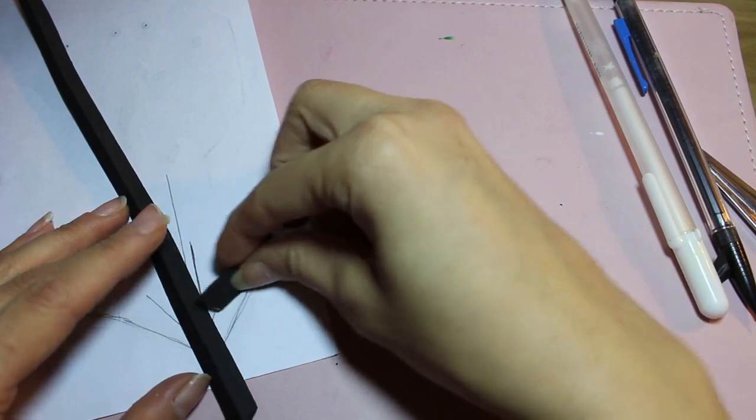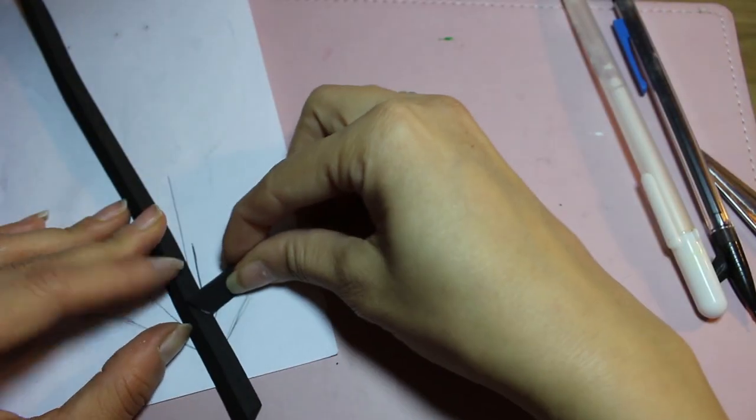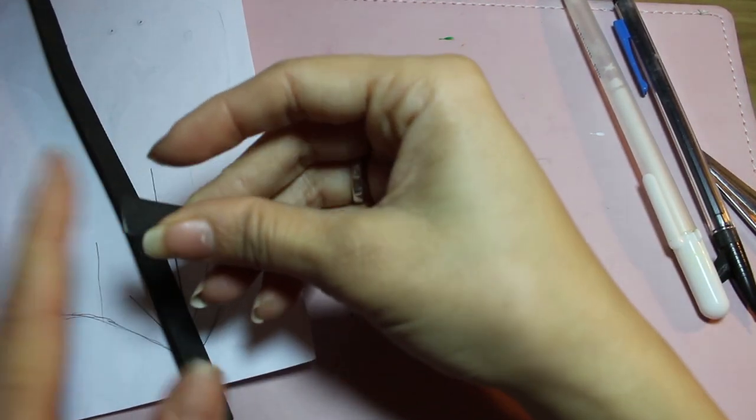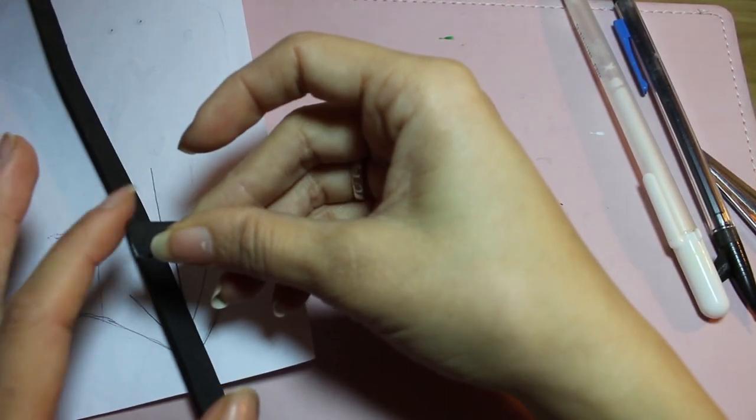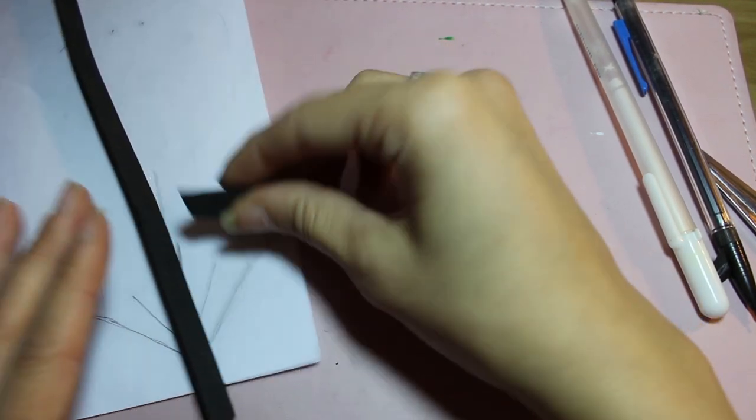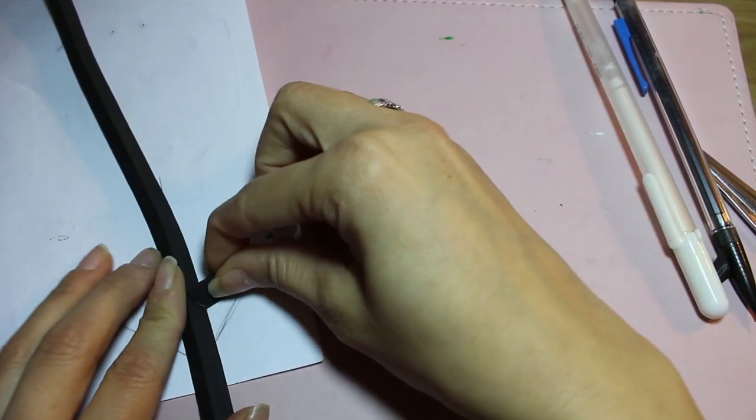And then to connect bevels just kind of randomly somewhere in the middle of another bevel, you just cut them. Cut off like the bottom section at an angle so that the top is the longest point and the bottom is the shortest point. And the slope of this angle pretty much matches the slope of your bevel.